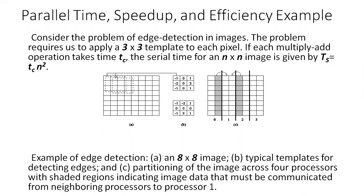Total serial time divided by total parallel time is the speedup, and efficiency is the ratio of speedup to the number of processing elements. Speedup divided by processing element count p gives us the efficiency. The example of parallel time, speedup and efficiency — we will discuss in today's lecture.